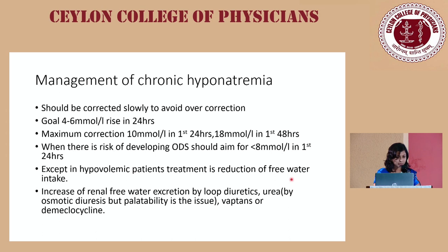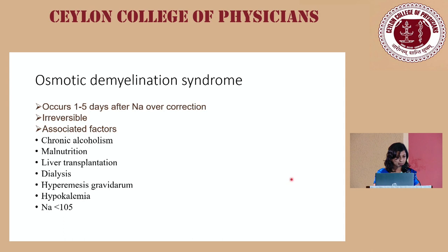Managing chronic hyponatremia is different: aim for a lower correction goal of 4–6 mmol/L per 24 hours, with a maximum of 10 mmol/L per 24 hours. Options include fluid restriction, loop diuretics, urea acting via osmotic diuresis, and consideration of Vaptans.